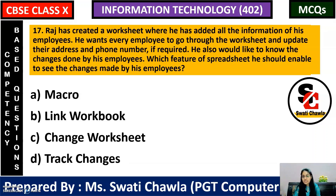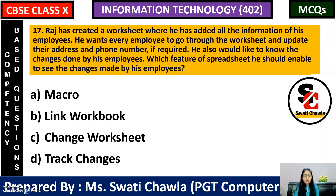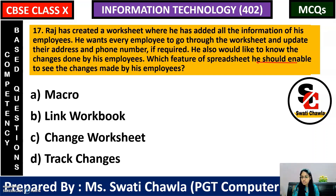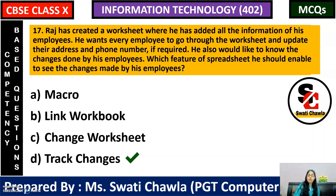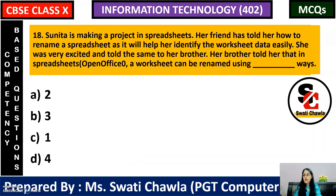Next: Raj has created a worksheet with all the information of his employees. He wants every employee to go through the worksheet and update their address and phone number. He also wants to know the changes done by his employees — to see who made which changes. Which feature of spreadsheet should he enable? Track changes. When track changes option is turned on, the changes are highlighted with a red border, so those changes are separately visible.